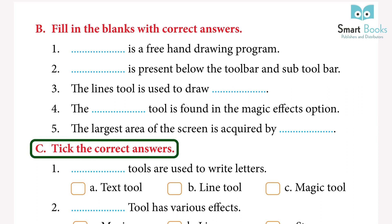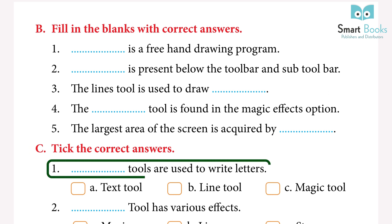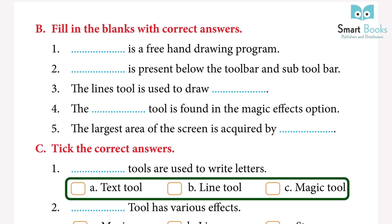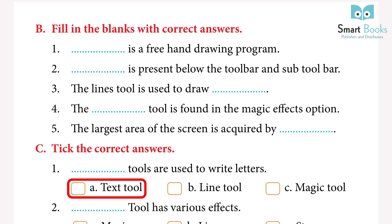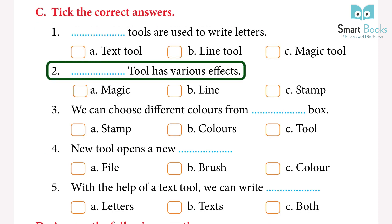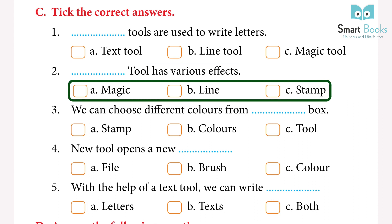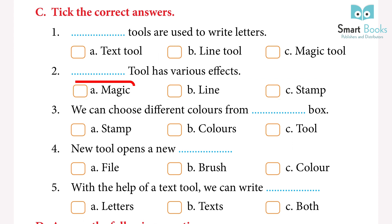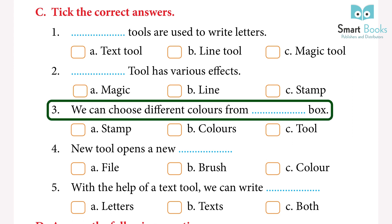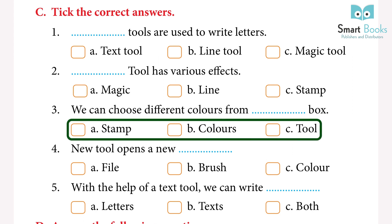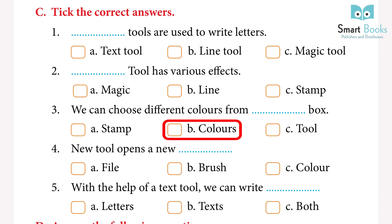Exercise C: Tick the correct answer. 1. Which tool is used to write letters? Answer: A. Text Tool. 2. Which tool has various effects? Answer: A. Magic Tool. 3. We can choose different colors from which box? Answer: B. Colors box. 4. The New Tool opens a new what? Answer: A. File. 5. With the help of the Text Tool, we can type what? Answer: A. Letters.